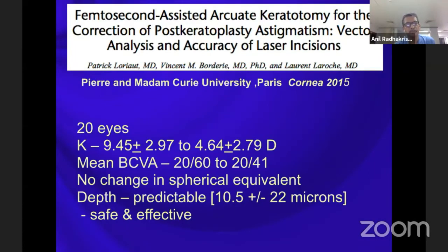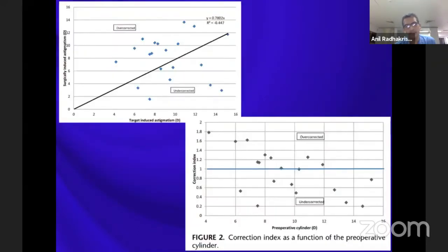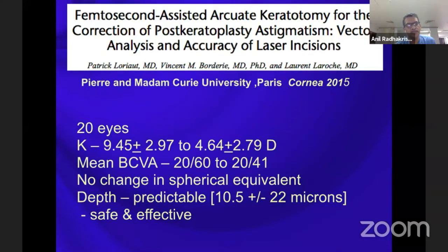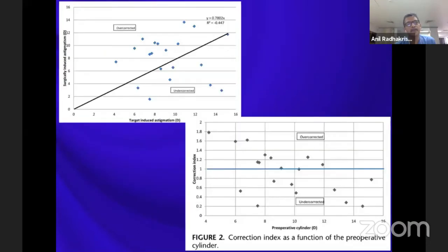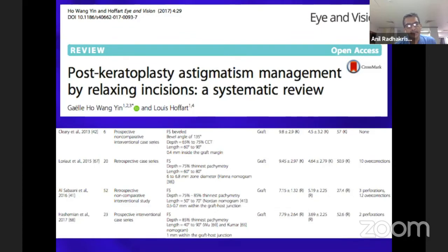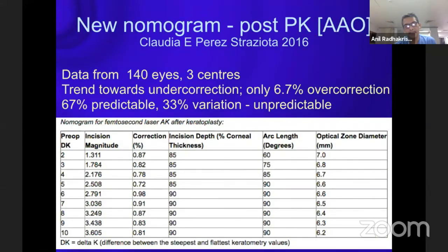One study used femtosecond arcuate keratotomy for this astigmatism and found that from a pre-op average of 9.45 diopters, it came down to 4.64 diopters. The depth of the femtosecond laser cut averaged 10.5 micrometers and was very consistent, making it safe and predictable. However, mean best-corrected visual acuity improved by barely one line, with a tendency for over-correction in low astigmatism and under-correction in high cylinders. A systematic review by the American Academy led to a new nomogram, with best results seen in moderate astigmatism.